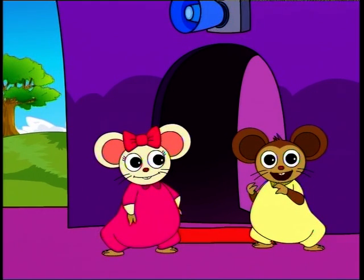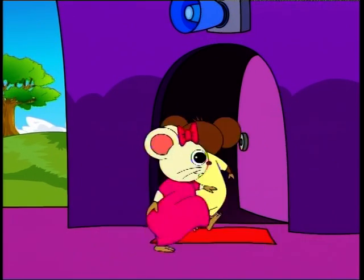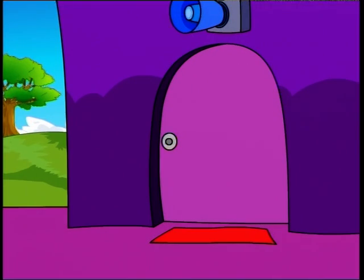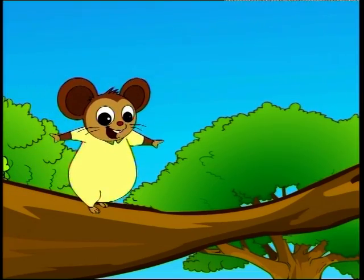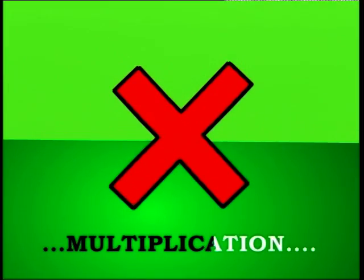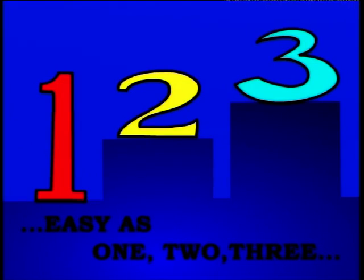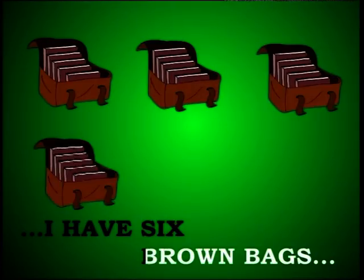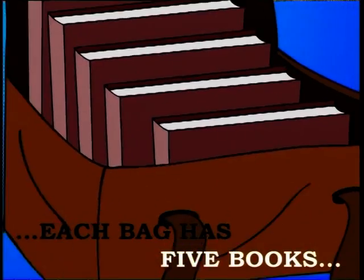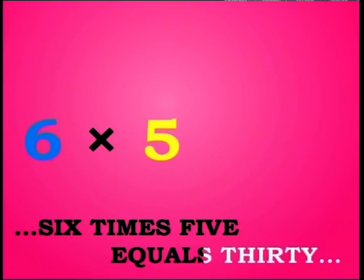Yeah! And don't forget to memorize your times table, okay? See you soon, bye! Multiplication is counting things in groups, easy as one, two, three. Do it and you will see. I have six brown bags, each bag has five books — how many in total? Six times five equals thirty.